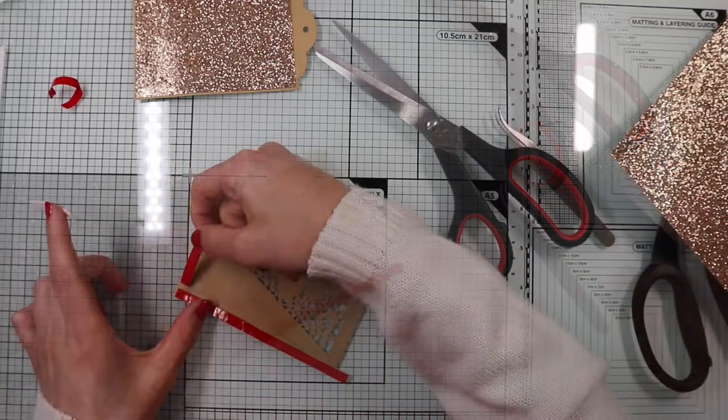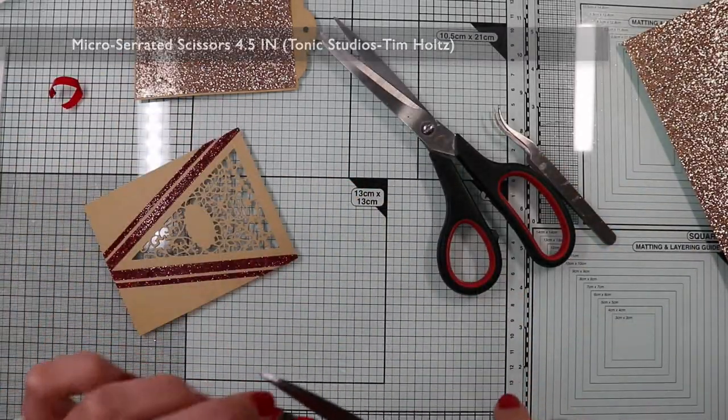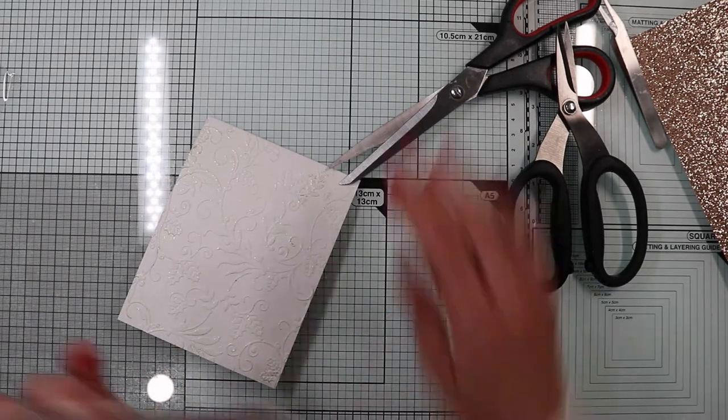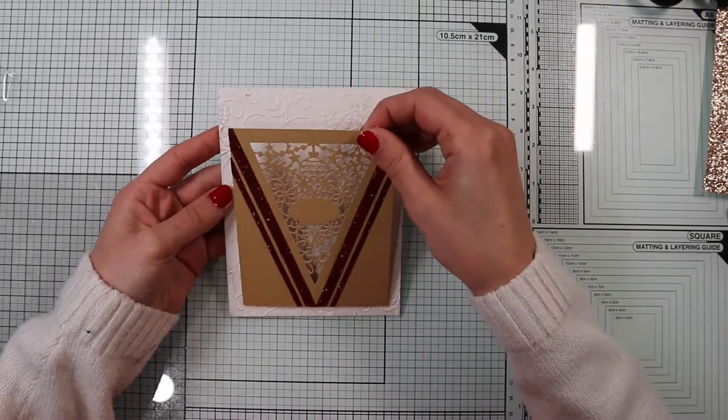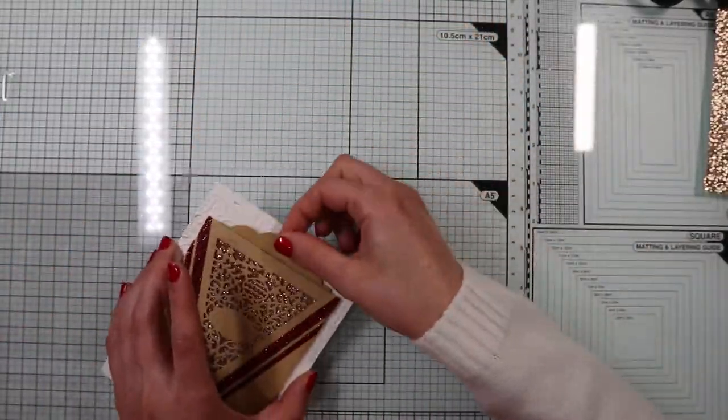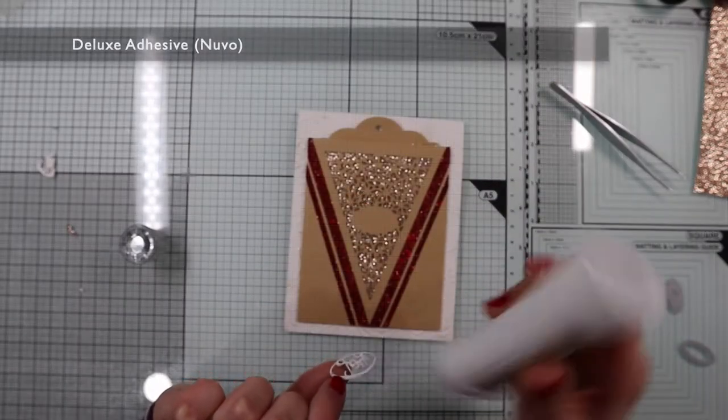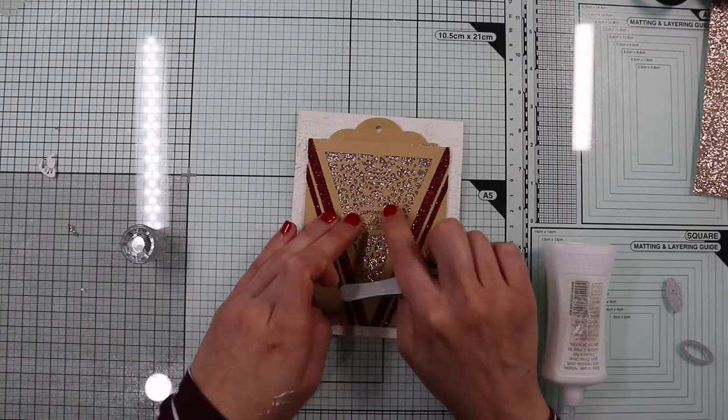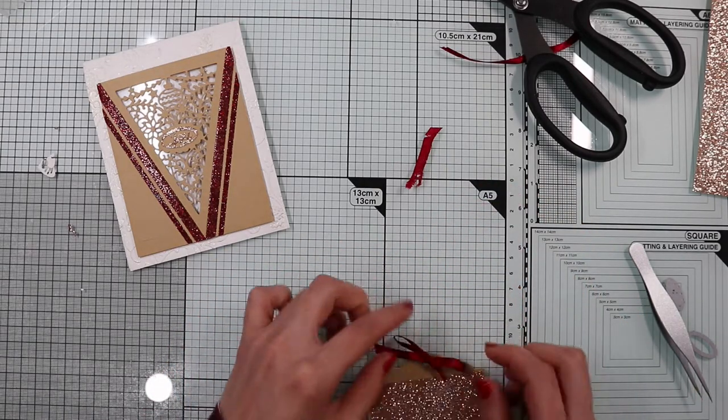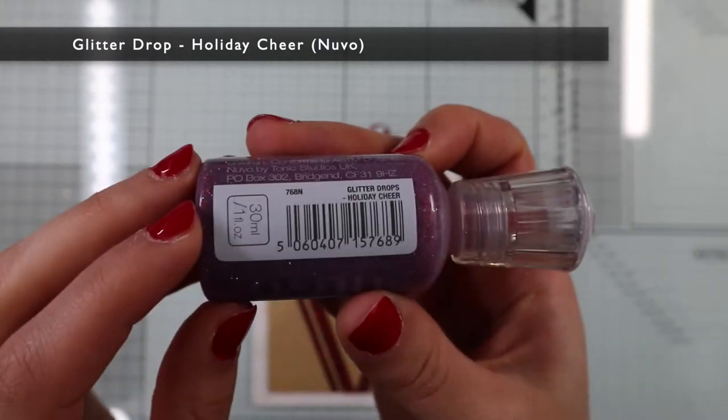Of course, I don't apply the foam tape on the top where I will put the moving part. I'm going to stick the slider card pocket onto the card base. And the slider card is ready. I just have to add the sentiment by die cutting the word Joy from the kit. I finish the card by creating a red bow in the upper hole of the mobile tag and adding a few drops of this holiday cheer glitter drop not included in the kit.